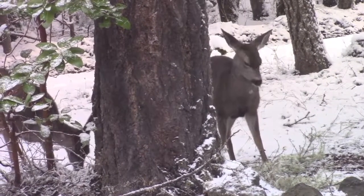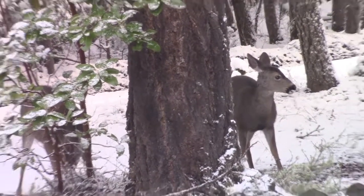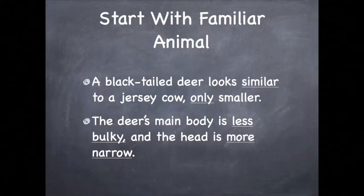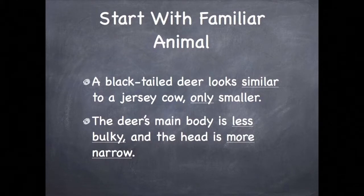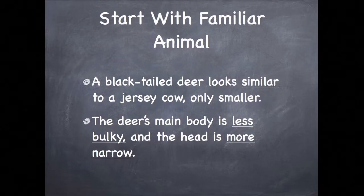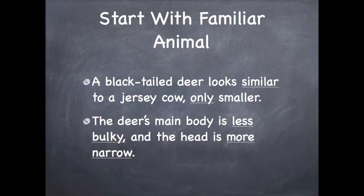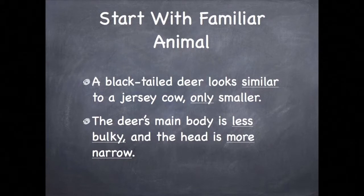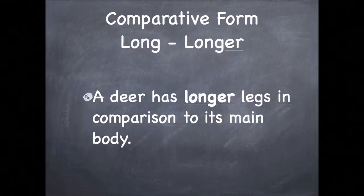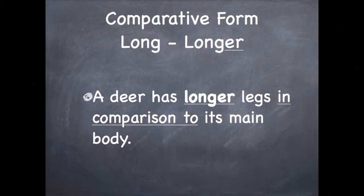As we did when we contrasted a deer with a dog, we point out the main ways a deer is different. We start with a couple of sentences that show the main contrast in size and bulk. We use the connecting words 'similar to' and 'only' to show that we're comparing but also contrasting. We use the rule of adding '-er' to an adjective to make a comparative, and the word 'more' before an adjective to achieve the same thing. We also use the words 'in comparison to' in order to communicate the proportion of leg length to body size.